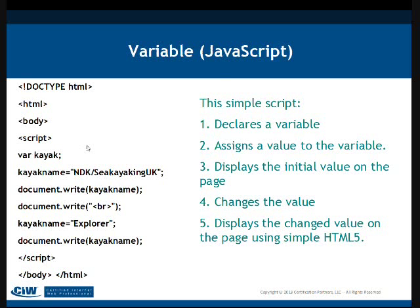Here's a JavaScript variable used in a simple HTML file. You've got a doctype, a script being declared, and the variable 'kayak' with the name 'NDK Kayaking UK'. You can write the kayak name out using the document.write functionality of JavaScript, and then you can give it a name like 'Explorer' which will display on the page. Each language has its own way of declaring variables — Perl works one way, PHP another, JavaScript another — but as a beginning developer these are the concepts you'll have to understand.